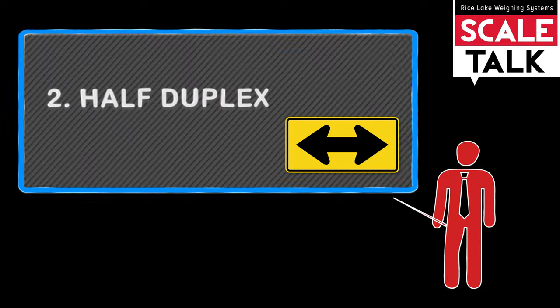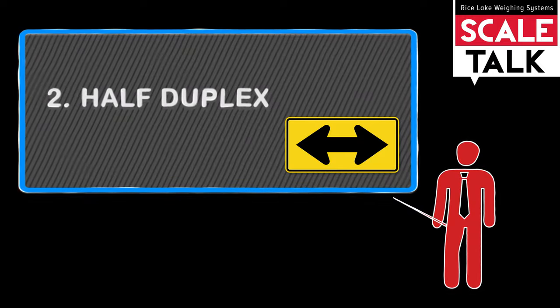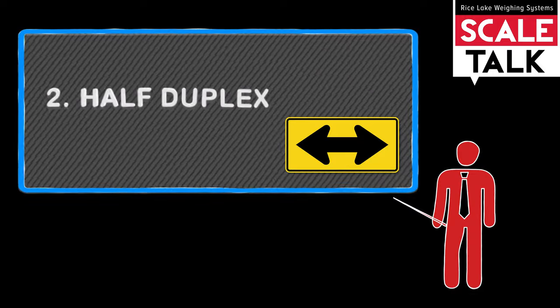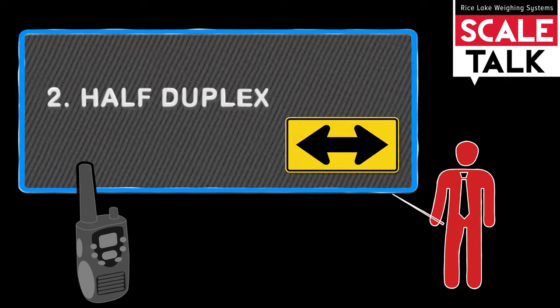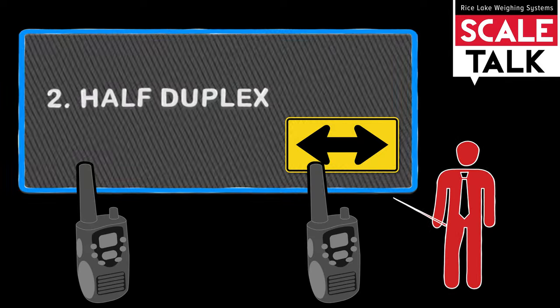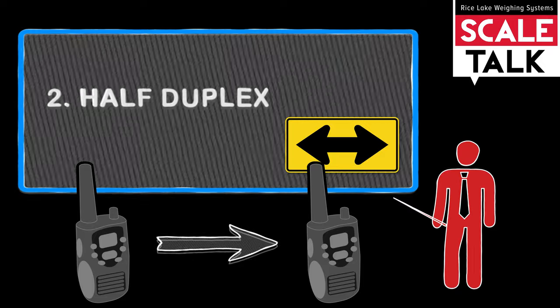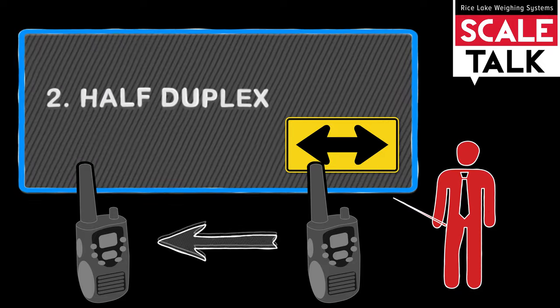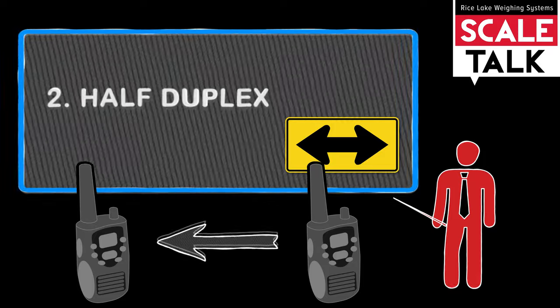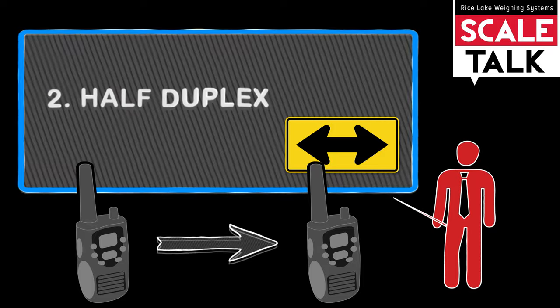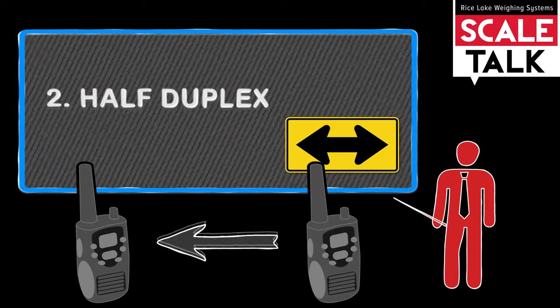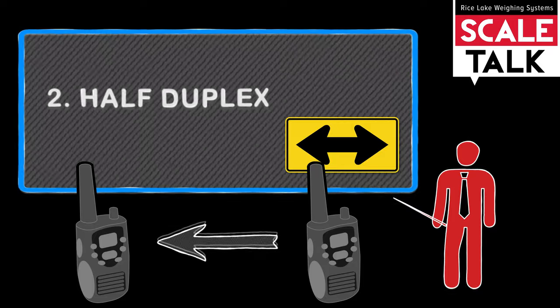When one device is transmitting, the other device receives the information. A good example of this is a two-way radio or walkie-talkie. When using one of these devices, if you press the talk button, you can no longer listen to incoming messages. You can communicate back and forth, but only talk or listen at a given time. That's half-duplex.